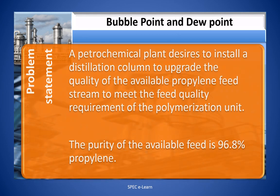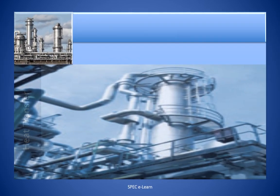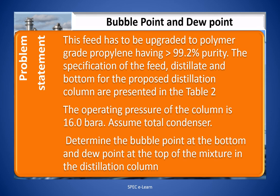Problem Statement: A petrochemical plant decides to install a distillation column to upgrade the quality of the available propylene feed stream to meet the feed quality requirement of the polymerization unit. The purity of the available feed is 96.8% propylene. This feed has to be upgraded to polymer grade propylene having greater than 99.2% purity. The specifications of the feed, distillate, and bottom for the proposed distillation column are presented in Table 2. The operating pressure of the column is 16 bar absolute. Assume total condenser. Determine the bubble point and dew point of the mixture in the distillation column.